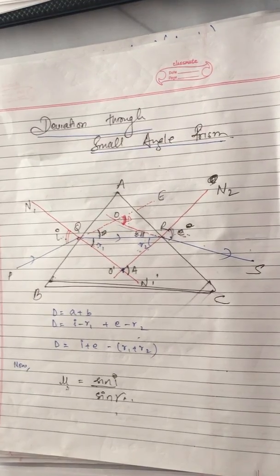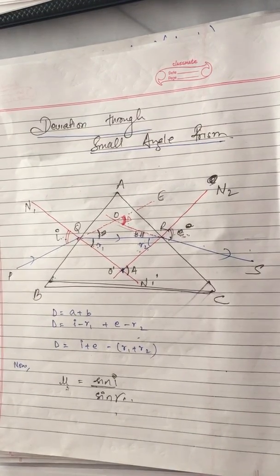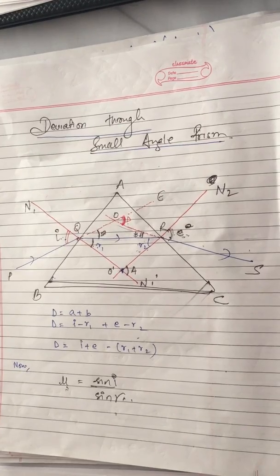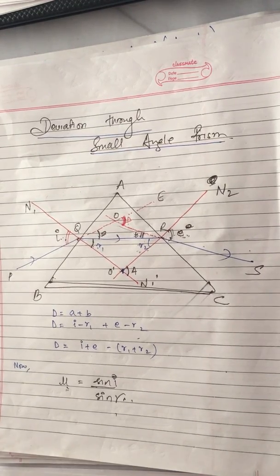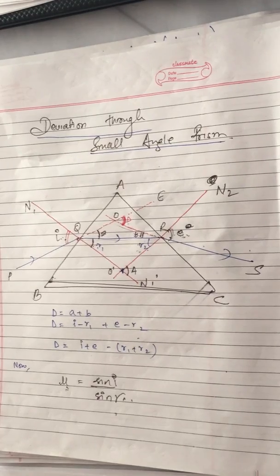Hello guys, this is Rushan and in this video we are going to learn about deviation through a small angle prism. The deviation of a small angle prism is given by: D is equal to A times (mu minus 1).